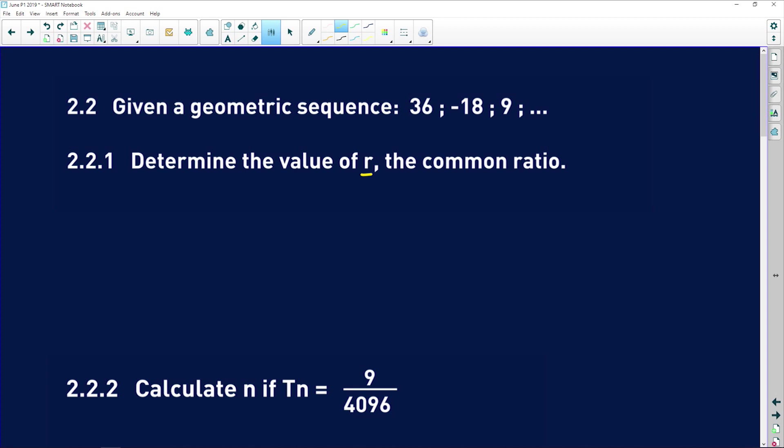You must remember that to get from term 1 to term 2, we multiply by something, and term 2 to term 3, we multiply by the same thing. So r is equal to term 2 divided by term 1, which is negative 18 divided by 36, which is negative 1 half.